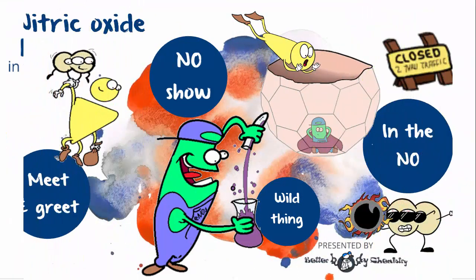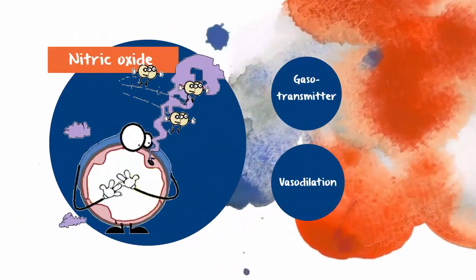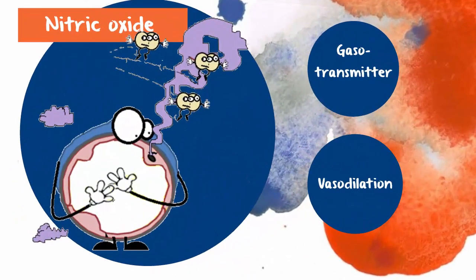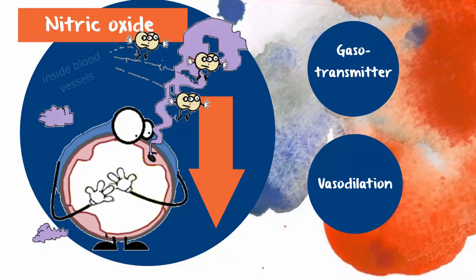This week, we feature the nitric oxide system in endothelial cells. In someone who is insulin resistant, there is a chronic shortage of nitric oxide inside the blood vessels.